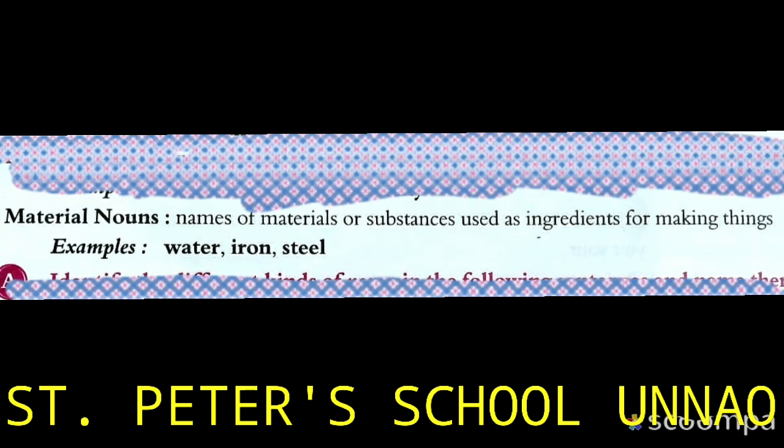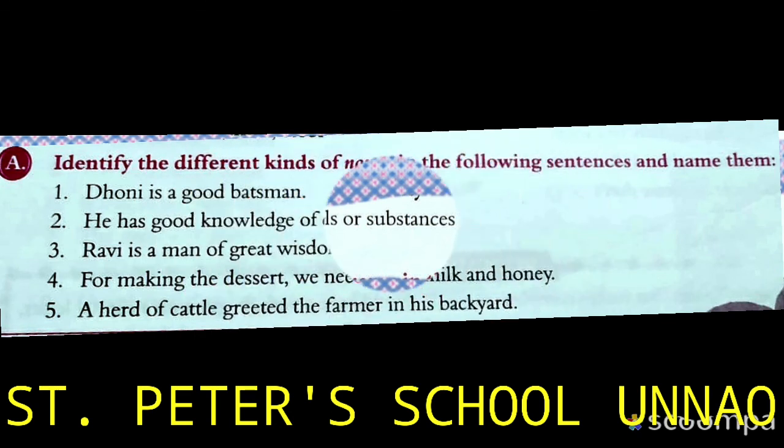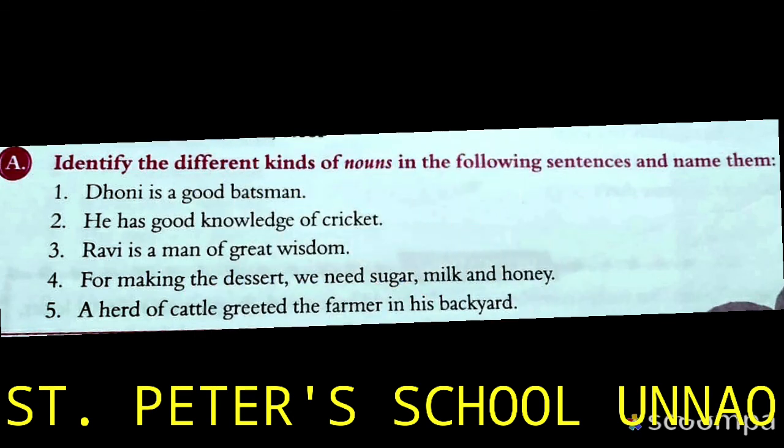I hope you now understand nouns and their kinds. After this, you have to do Exercise A — identify the different kinds of noun. Underline the noun in the sentence and write its kind in front of it.